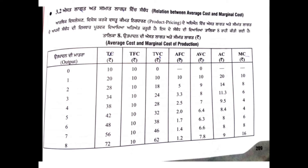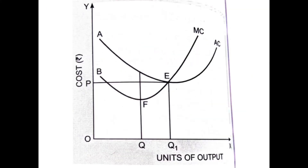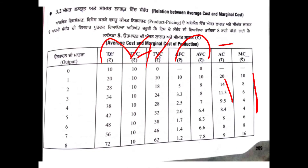The next concept is the relationship between average cost and marginal cost. Total cost is used to calculate both. Average cost is derived from total cost, and marginal cost is also calculated from total cost. For example, average cost is 20, marginal cost is 8.